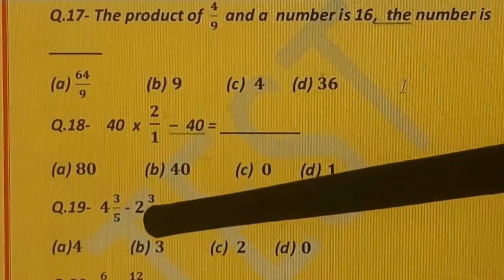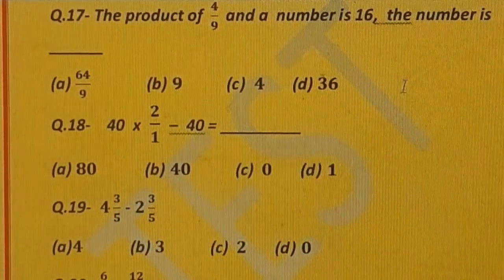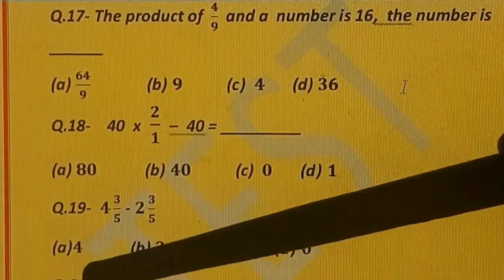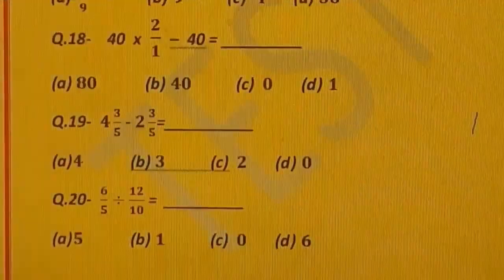Question number 19. 4 whole 3 upon 5 minus 2 whole 3 upon 5. You have to tell the answer after solving. Options are: A) 4, B) 3, C) 2, and D) 0.